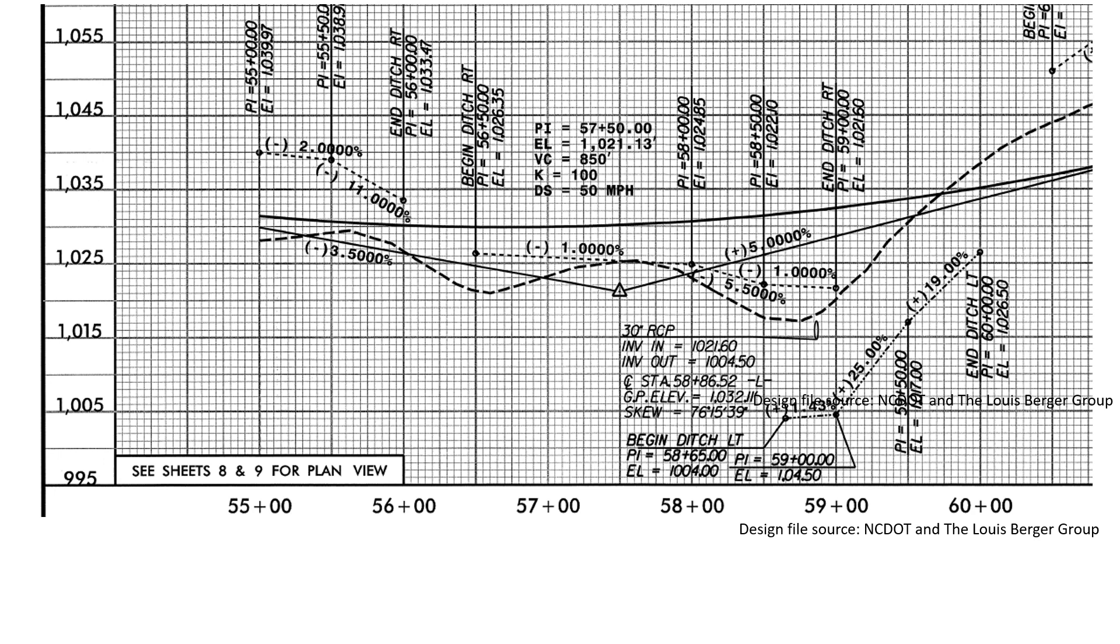So we'll start labeling some of the information here and working through this problem. We're going to start with our grades, our entrance grade G1, our exit grade G2, and our curve. So this is what we're focused on for this problem. G1 is negative 3.5%, G2 is 5%.